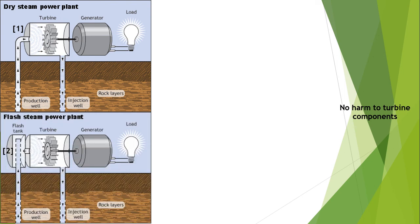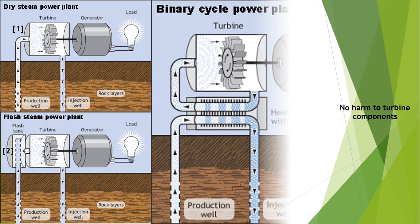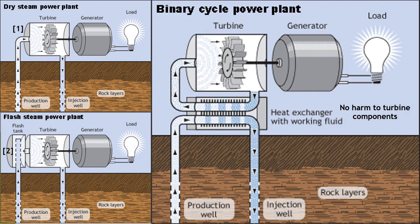The second type is the flash steam power plant. Flash steam power plants take high-pressure hot water from deep inside the earth's crust and convert it into steam to drive generators. When the steam cools, it condenses to water and is injected back through an injection well. Most geothermal power plants use this flash steam technology.